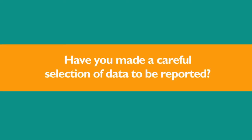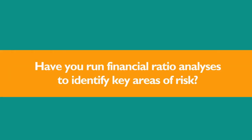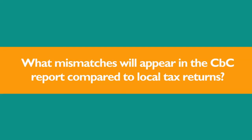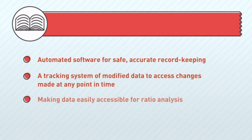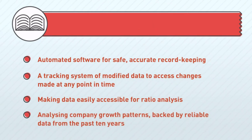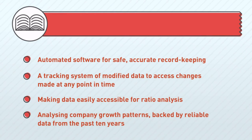To review: Have you made a careful selection of data to be reported in local, country, and global filings? Have you run financial ratio analyses to identify key areas of risk? And are you aware of the mismatches that will appear in the CBC report compared to local tax returns? If you've answered no to one or more of these questions but want to avoid the fate of Caterpillar, consider these as part of your step-by-step plan.